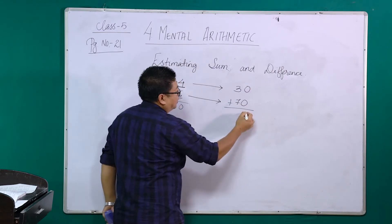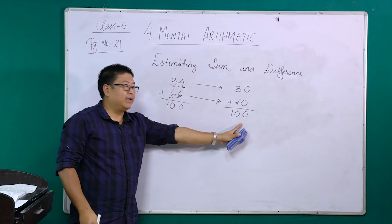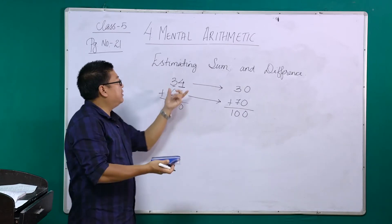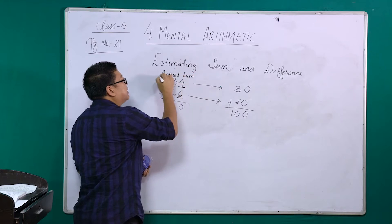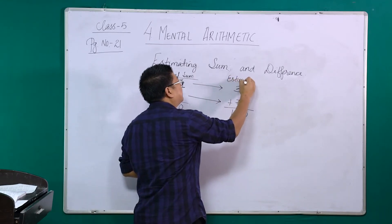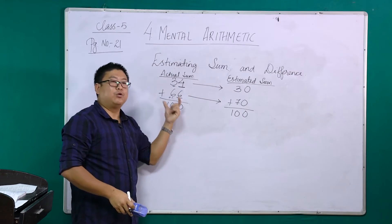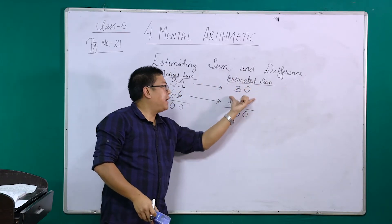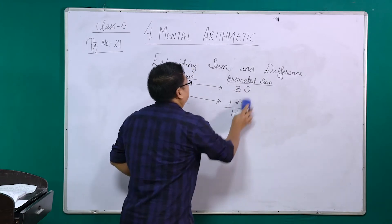Now you add them: 0 plus 0 is 0, 7 plus 3 is 10. So you are getting the same answer here coincidentally. Sometimes this will vary. The estimation of this sum — this part — will be called your estimated sum. The normal addition result is called the actual sum. In this chapter, we are going to deal mainly with the estimated sum unless they ask for the actual sum as well.